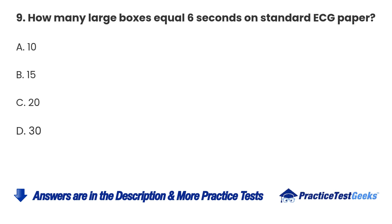9. How many large boxes equal 6 seconds on standard ECG paper? A. 10. B. 15. C. 20. D. 30.